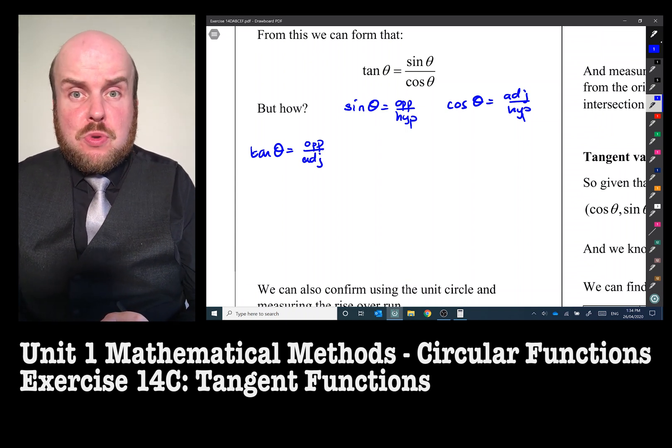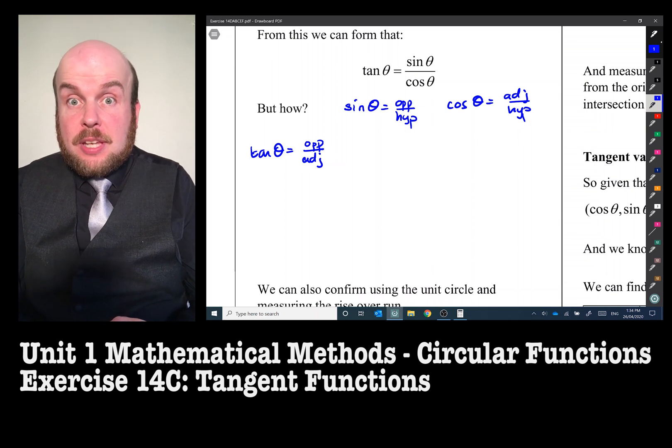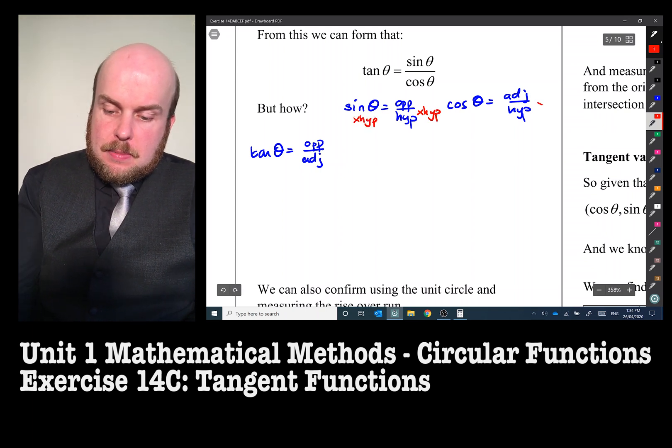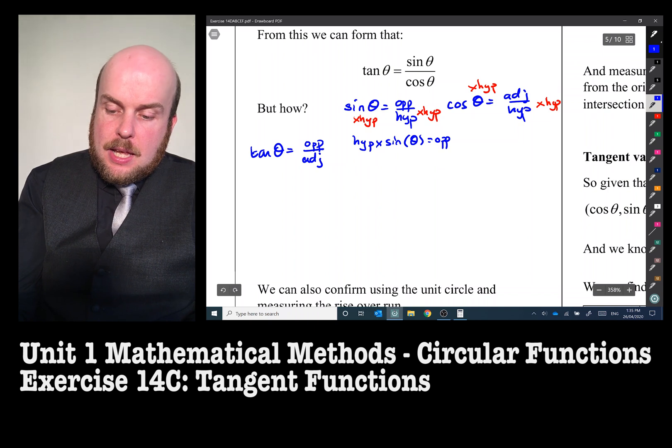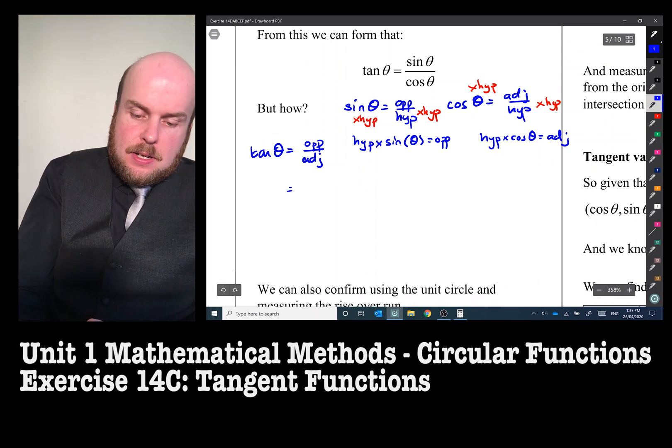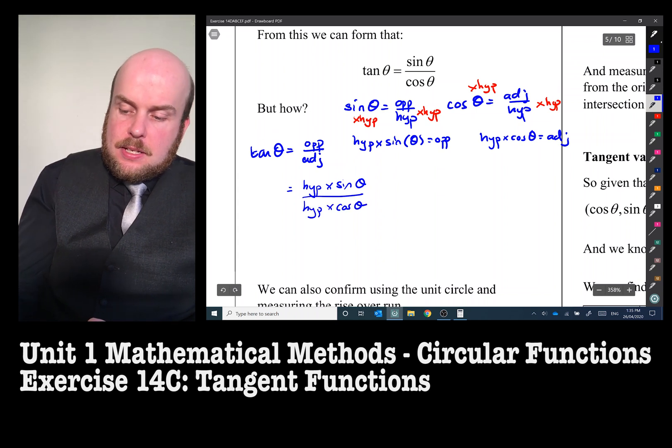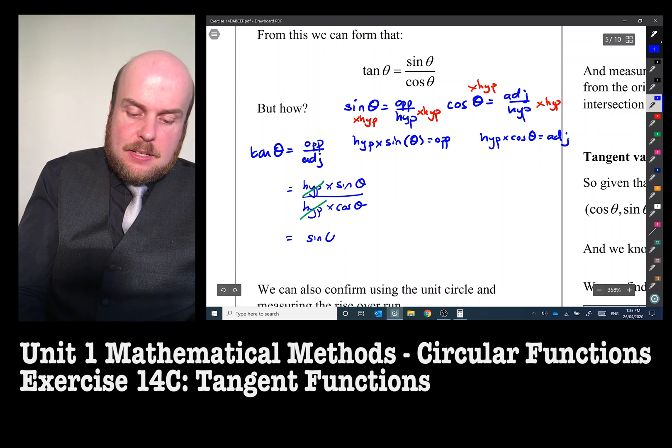I'm going to rewrite those sine and cos formulae to make either opposite or adjacent the subject. So I'm going to multiply both sides by hypotenuse. I get hypotenuse times sine θ equals the opposite, and hypotenuse times cos θ equals the adjacent. Then I can substitute them into the formula. So this becomes hypotenuse times sine θ over hypotenuse times cos θ. The hypotenuses can divide and cancel out each other. Therefore, it equals sine θ over cos θ.